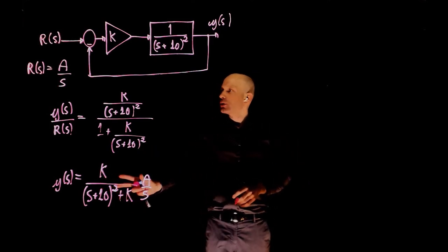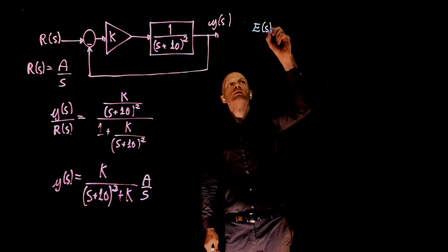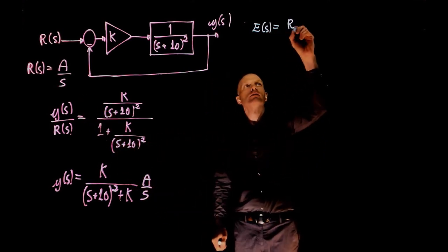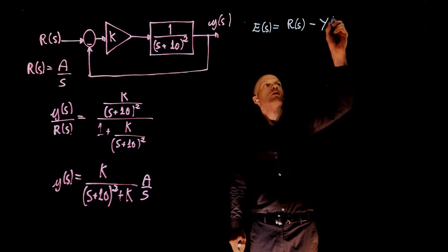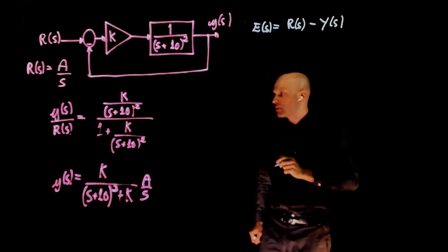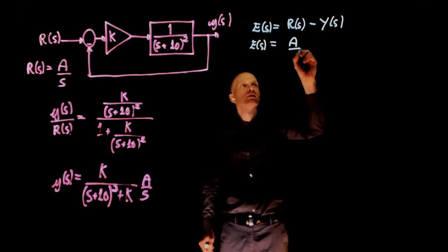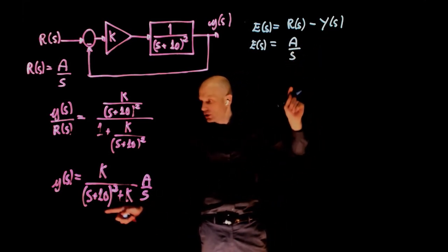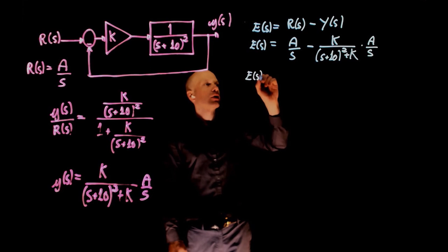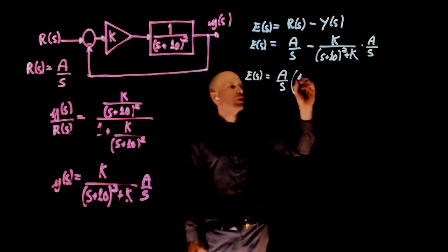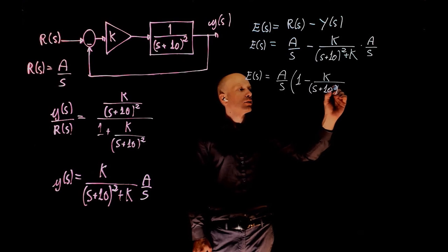If this is how the robot responds to a command r of s, the error can be simply defined as the desired position r of s minus the actual position of the robot, r minus y of s, what we give to it and where it goes. So the error now becomes r of s, a over s, and the actual position is this expression here. We can now factor a over s, and this gives 1 minus k over s plus 10 squared plus k.